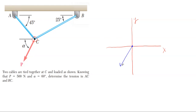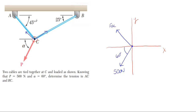We really only have one known force and it is that P force, which is 500 newtons, and it is at an angle of 60 degrees off of the X axis. I'm also going to put on my tension forces for the cables. Since P is pulling down, these cable forces will be pulling in tension in the opposite direction. So I'm going to apply FAC for the force in AC, which is 45 degrees off the horizontal.